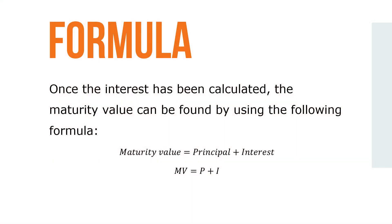Once interest has been calculated, the maturity value can be found by using the following formula: Maturity value equals principal plus interest, or MV equals P plus I.